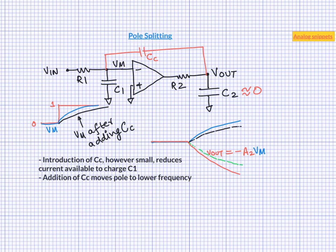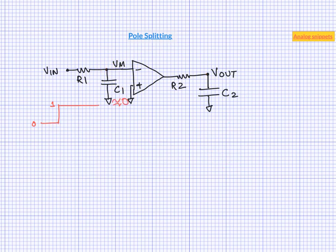Now let us turn the table around and make output node to be the slower of the 2 nodes. This time let us assume C1 to be almost 0. Now if apply a unit step at the input, VM node instantly follows this unit step. Output again changes exponentially with the time constant of the output node.